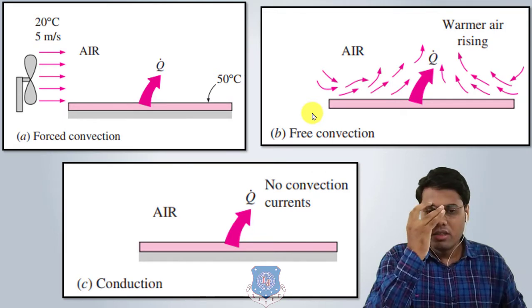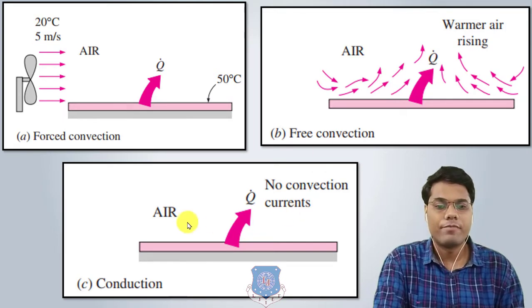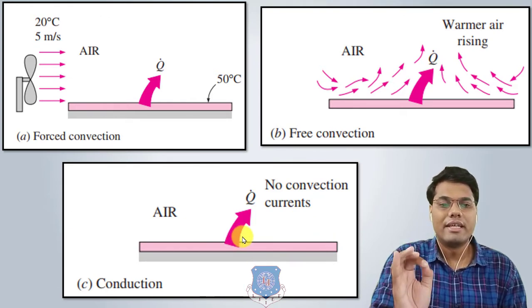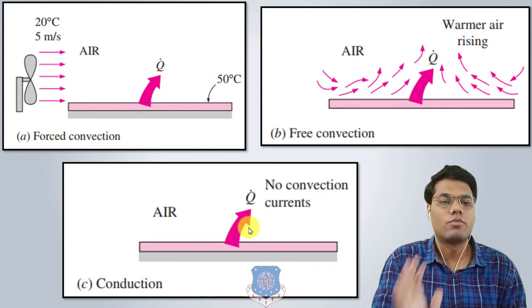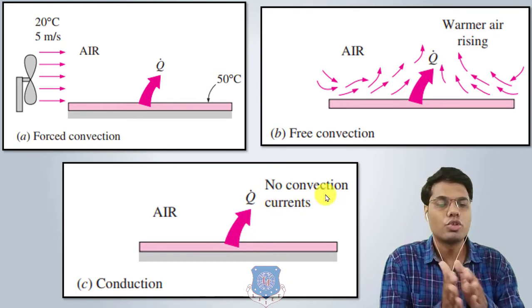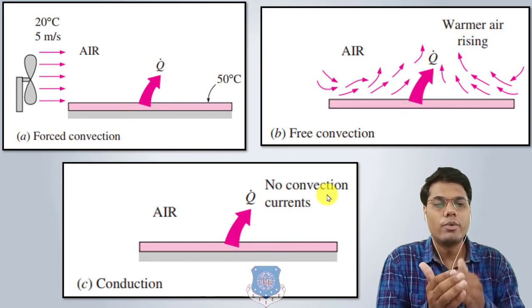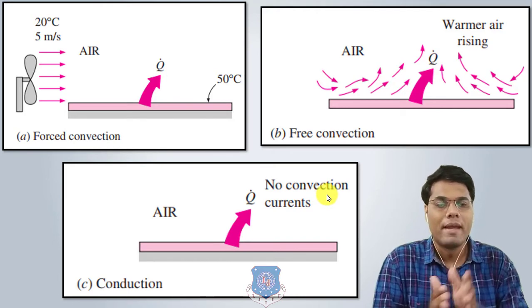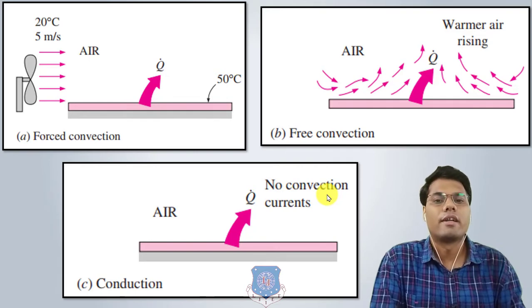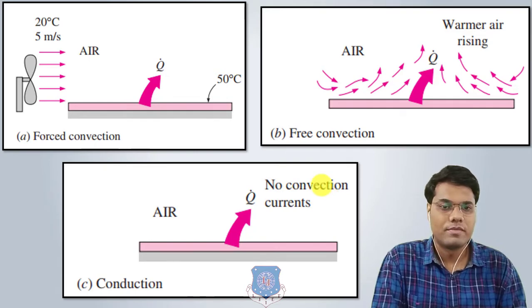If there is a layer of air in contact with the surface and there is no motion of the air, then heat will transfer only by conduction mode — there is no convection current. So when there is no motion of any fluid, heat transfers by conduction; when there is fluid motion, it transfers by convection.